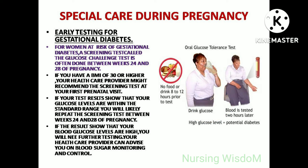Special care during pregnancy — yearly testing for gestational diabetes: for women at risk, a screening test called the glucose challenge test is often done between weeks 24 and 28 of pregnancy. If you have a BMI of 30 or higher, your healthcare provider might recommend the screening test at your first prenatal visit. If results show glucose levels within the standard range, the screening test will be repeated between weeks 24 and 28. If results show high blood glucose levels, further testing will be needed, and your provider can advise on blood sugar monitoring and control.